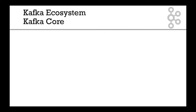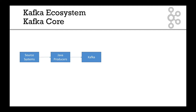Let's talk about the architecture of what we're going to do and where everything fits in. You may have seen these slides already back in the beginner's course, but let's go over them again. Here is Kafka in the middle, and we have our source systems and we have our Java producers — we've been writing a ton of them. Then we have our target systems, and to get Kafka to the target systems, it is a Java consumer.